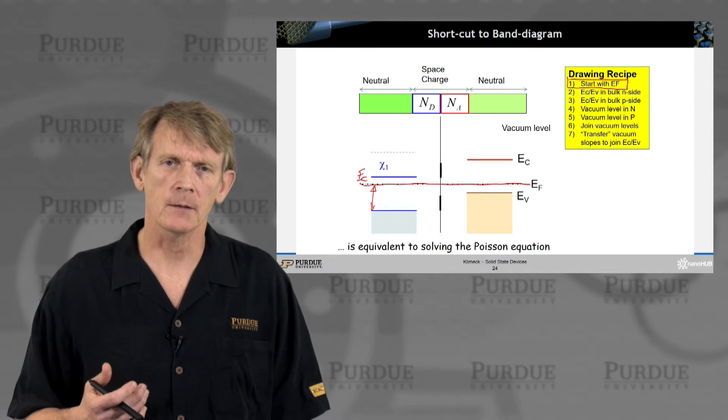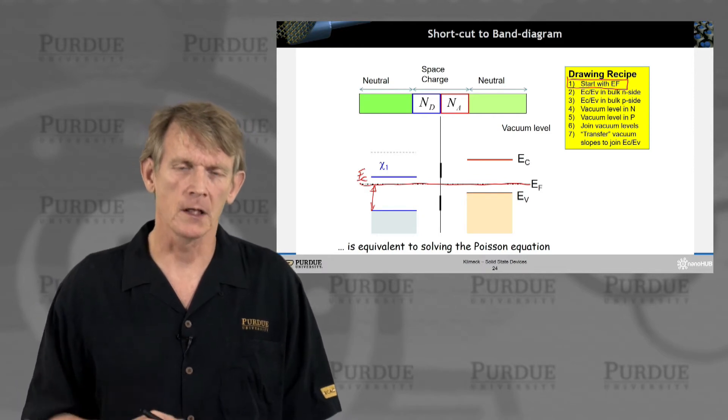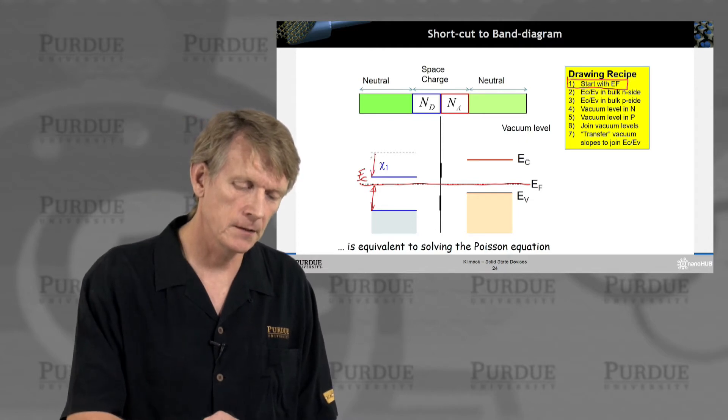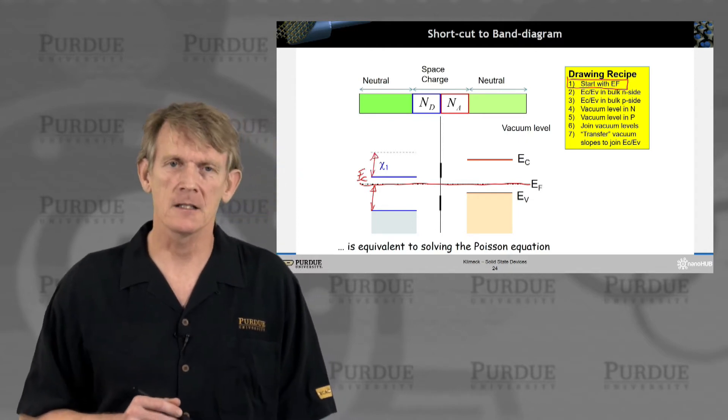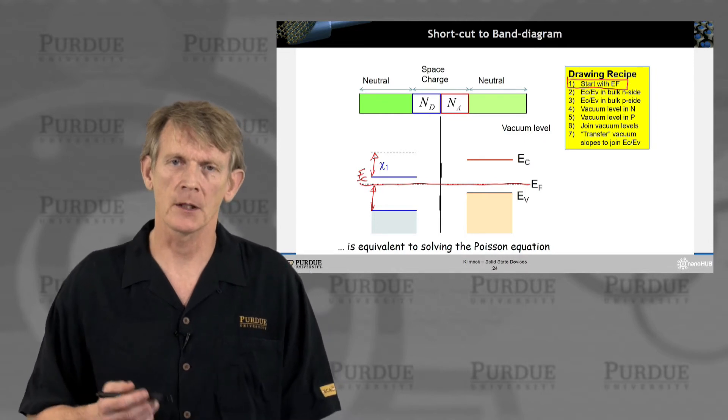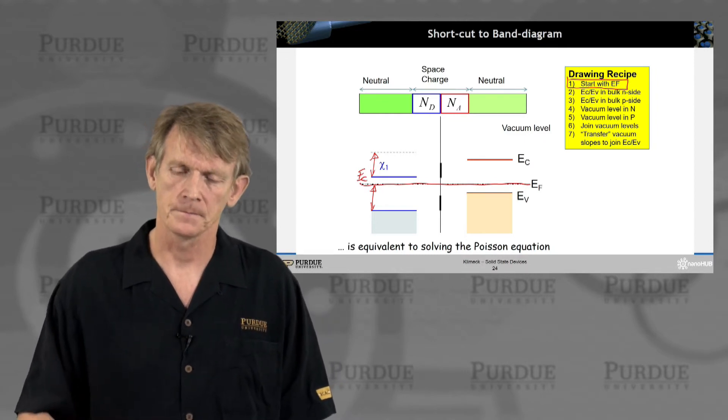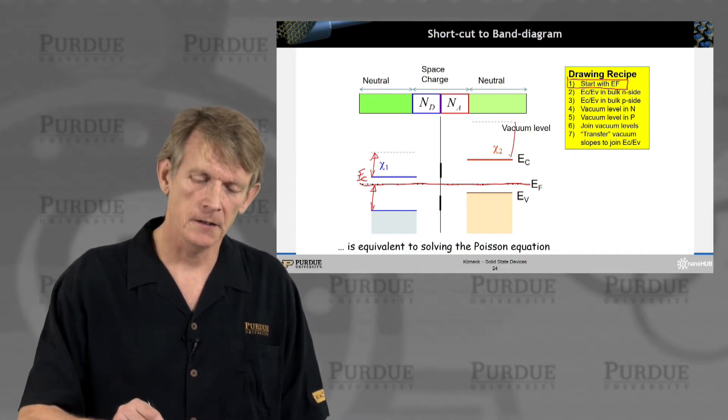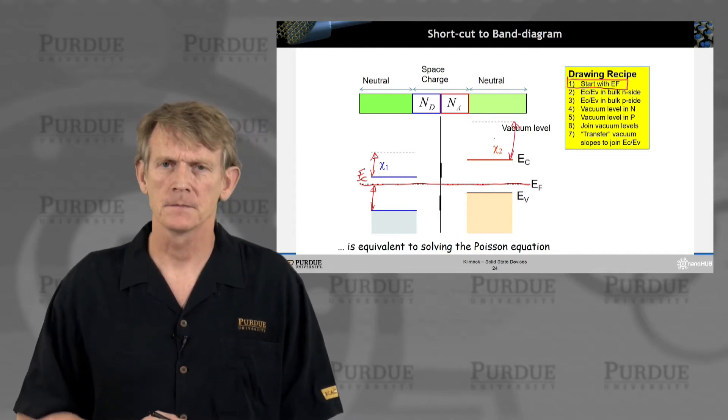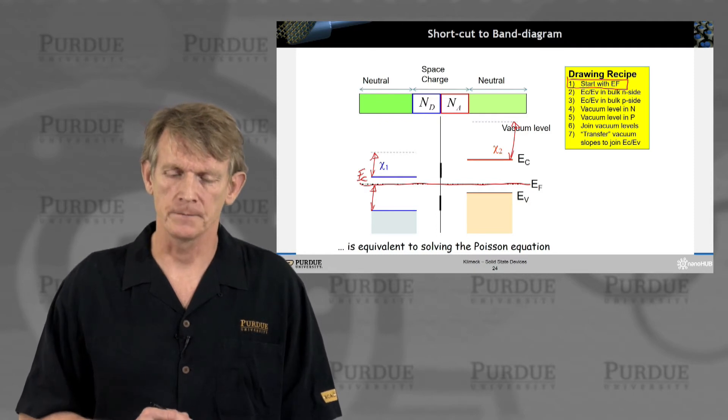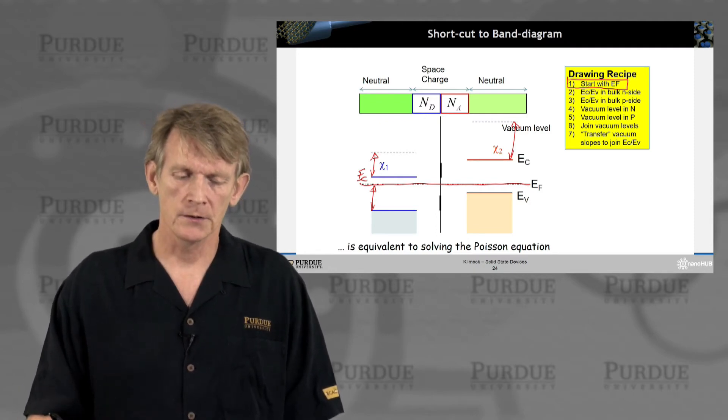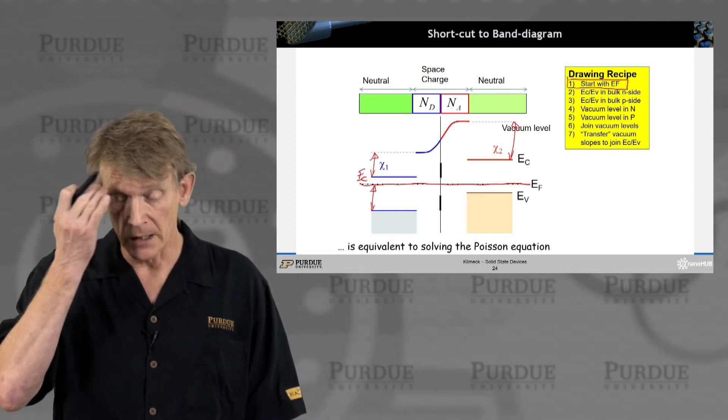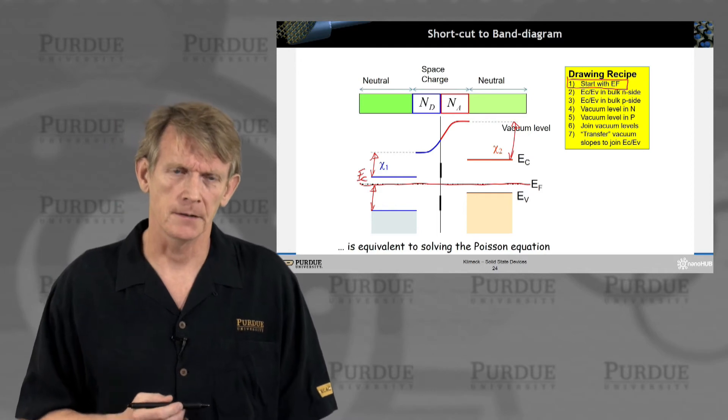I had mentioned in the previous segment that there is the vacuum level determined by chi1, which is basically the energy difference for an electron to leave the semiconductor completely. Similarly, we do this for the vacuum level here on the P side. We just draw it in.